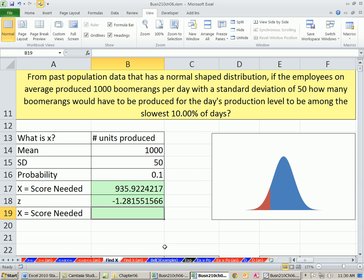From that, can we calculate X? This isn't a score—this is units needed to be considered part of the 10% slowest days. How do we do that? We know our mean, and Z means number of standard deviations above or below.